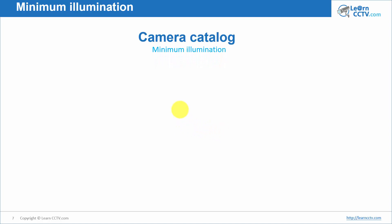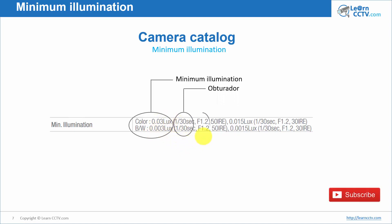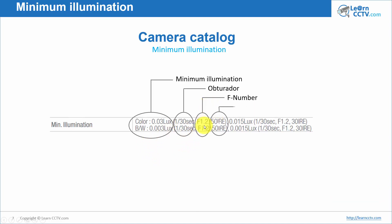Here's the information from a catalog: minimum illumination values are listed for both color and black-and-white — for example, 0.03 lux in color and less in black-and-white. The catalog also shows the shutter speed (e.g., 1/30 of a second), the lens aperture F-number, and the IRE reference. When comparing two cameras, you must compare all those values using the same parameters. Don't compare one camera at 30 IRE with another at a different setting — get the right comparison to buy the better camera for your project.